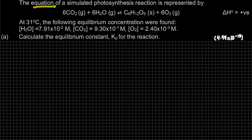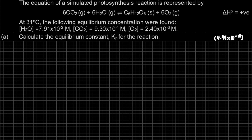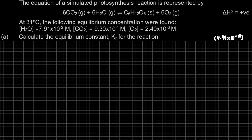Question 5: the equation of simulated photosynthesis reduction is represented by 6CO₂ gas plus 6H₂O gas in equilibrium with C₆H₁₂O₆ solid plus 6O₂ gas, and delta H is positive. At 31 degrees Celsius, the following equilibrium concentrations were found: H₂O is 7.91×10⁻² molar, CO₂ is 9.3×10⁻¹ molar, and O₂ is 2.4×10⁻³ molar.